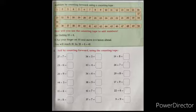Addition by counting forward using a counting tape. Children, here 1 to 15 number counting tape is given. See how you will use the counting tape to add numbers. For finding 35 plus 6, you put your finger on number 35 and go front 6 boxes. See 36, 37, 38, 39, 40, 41. So your answer will become 41.